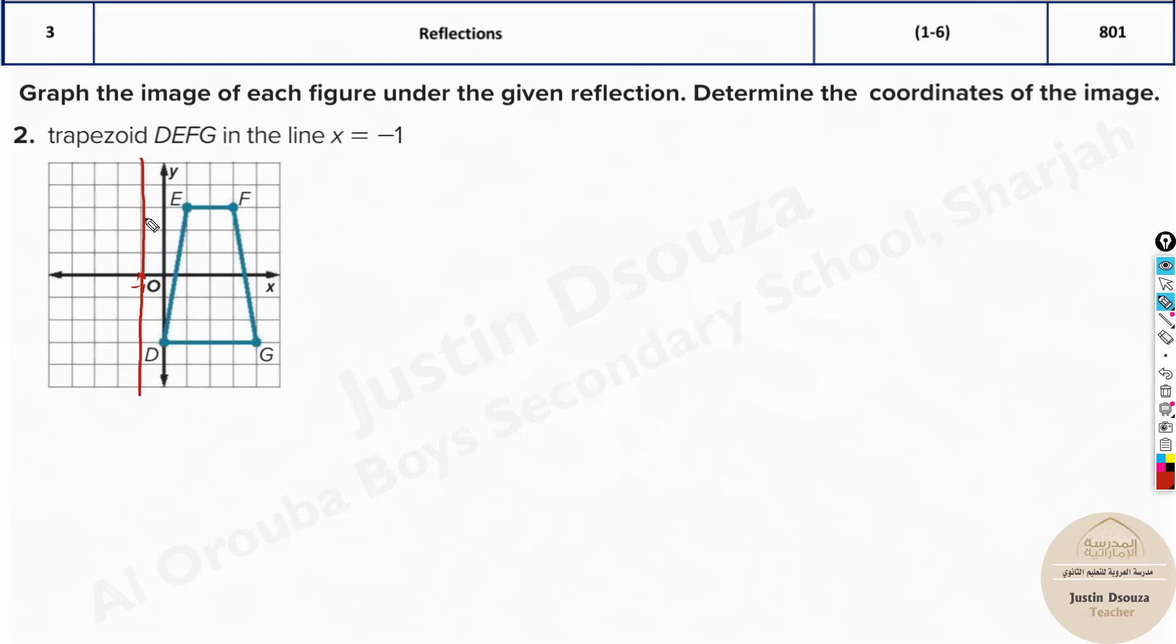Since it's MCQ part, I'll tell you a shortcut. Look at this line as the mirror. Now what is the point of E from here to here? 2, right? This will be reflected left side by 2. 1, 2, that is it. What about F? 1, 2, 3, 4. So 1, 2, 3, 4. This is the point. What about this? It's just 1. It'll be over here. And lastly, G is from here. It's 1, 2, 3, 4, 5. So it's 1, 2, 3, 4, 5 somewhere over here. That will be the answer.